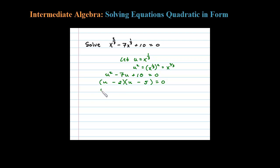If it doesn't factor, you can always use the quadratic formula. Here we have u minus 2 equals 0 or u minus 5 equals 0. Solving these, we get two solutions for u.